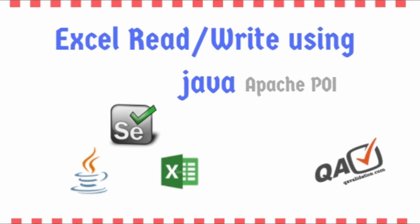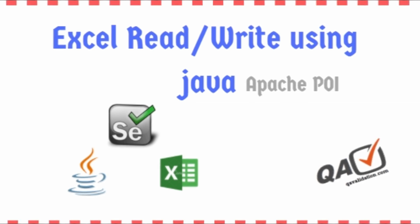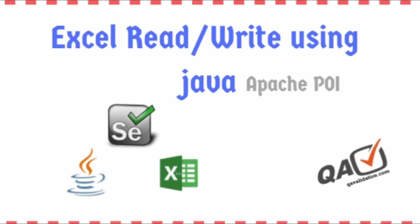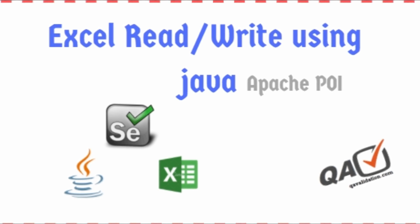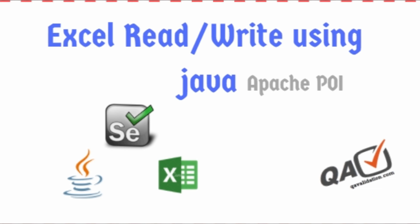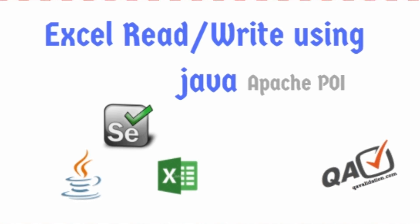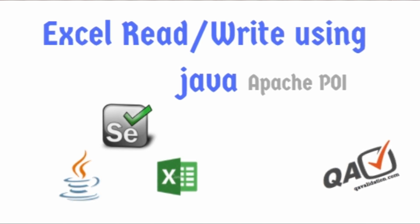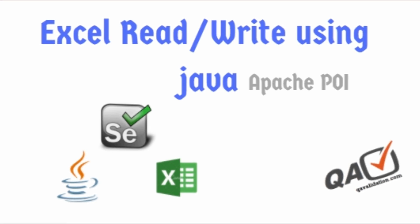Welcome to QAValidation.com. In this video we will see how we can access Excel sheet data using Java — specifically, how to perform certain operations on an Excel sheet using Java. For this we have a library called Apache POI which helps us read and write Excel sheets. Manually, we go to the folder path where the Excel file is, open the workbook, open the required sheet, then go to the particular row and column number to get our data. We will do the same operations using Java programming.